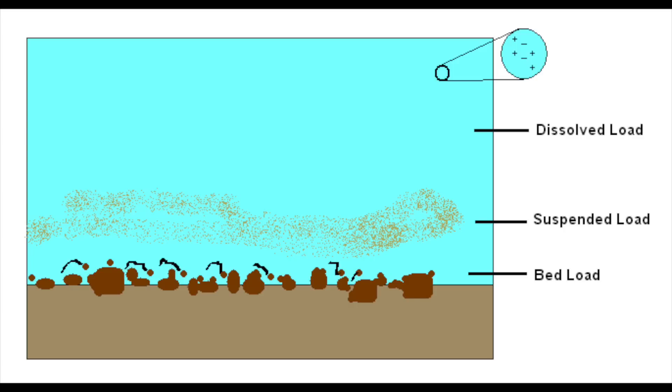The ways that rivers transport material is as a bed load, a suspended load, or in solution. There are four ways that material can be transported. Firstly, you can have traction, where larger particles like pebbles and boulders roll and slide along the river bed.